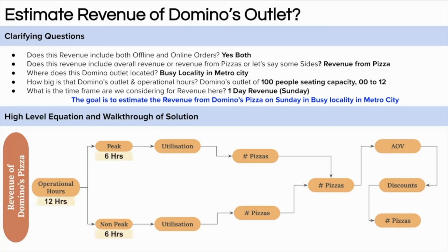In peak hours: 100% oven utilization. In non-peak hours: 50% oven utilization. For the number of pizzas in peak hour: 6 hours × 60 minutes ÷ 5 (since average baking time is 15 minutes, so 60 ÷ 15 = 4 batches per hour per oven, but we use 60 ÷ 5 here for the rate calculation). The number of ovens and their capacity forms the key supply-side constraint in this bottleneck-driven approach.